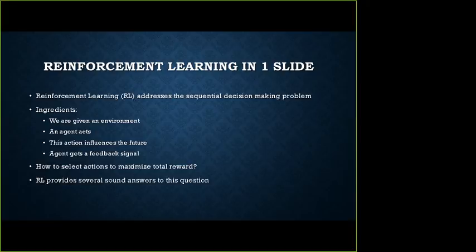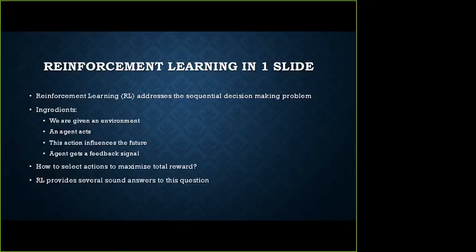RL is basically trying to address what is called the sequential decision making problem, and it has a few ingredients. We are given an environment in which an agent is acting or taking actions. These actions influence the future of where the agent is or what the environment state is. The agent gets a feedback signal every time it takes an action. Based on this feedback signal, the agent has to maximize some notion of total reward, and RL provides some sound answers to this question.